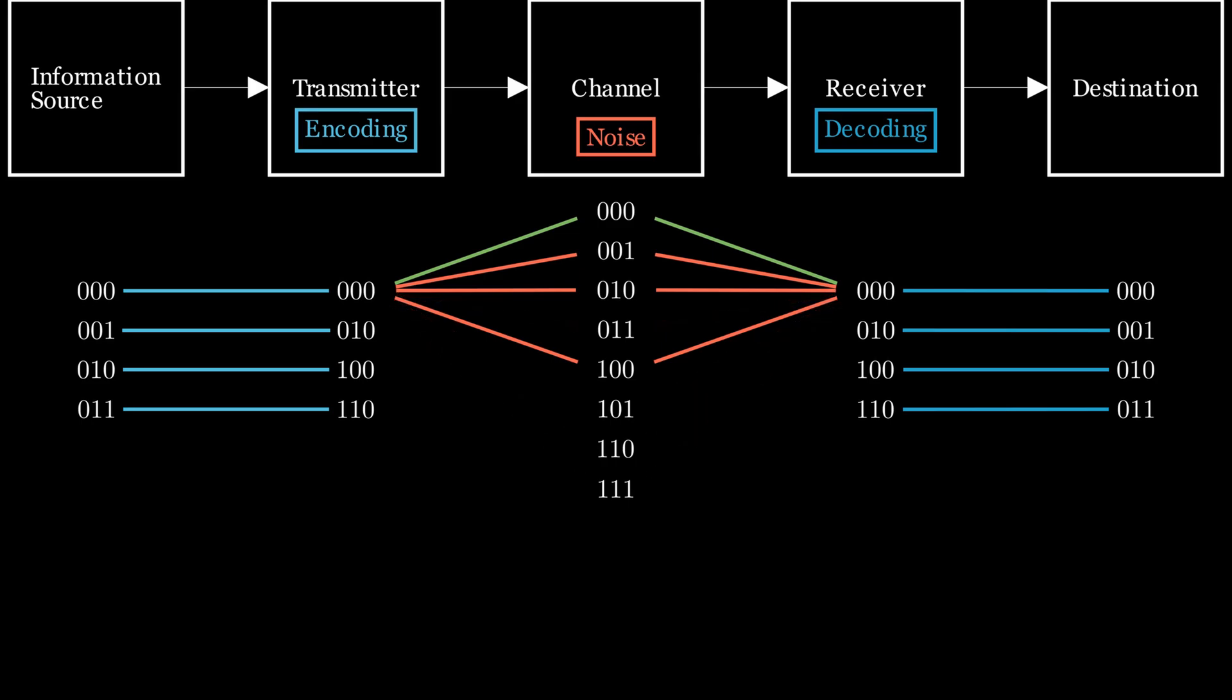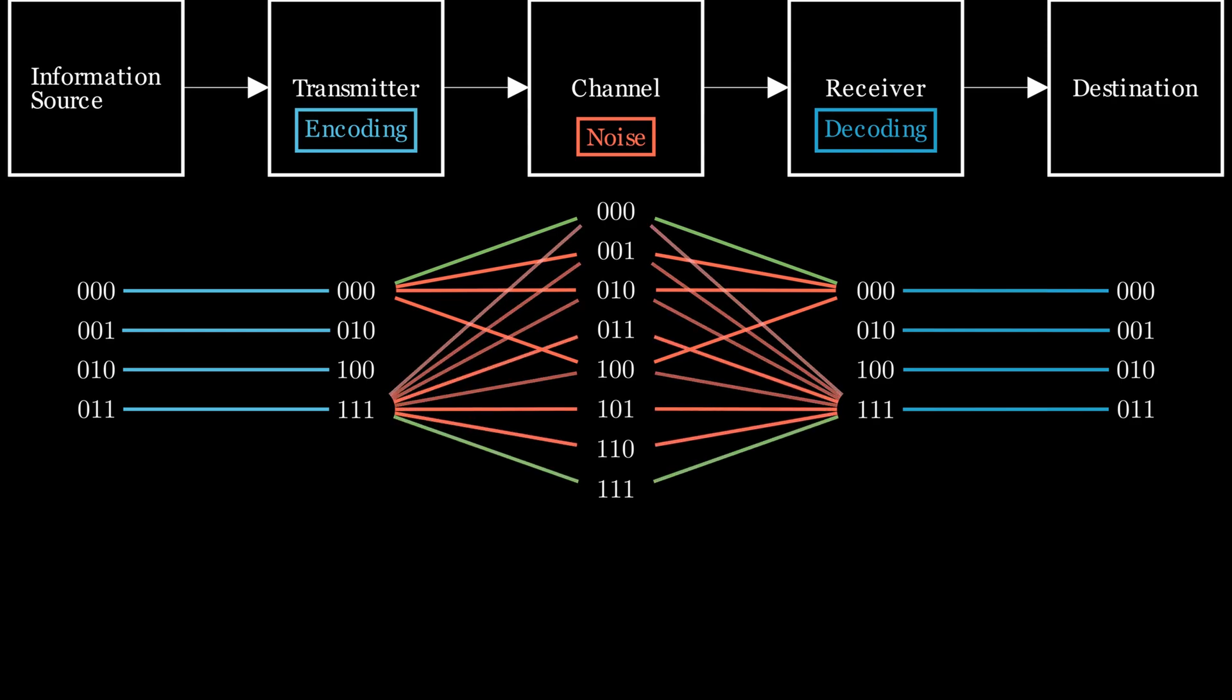And the same goes for the receiving part. To combat noise, we can just assume that some of those patterns of perturbation by noise are so improbable that they will never happen. Right now, we can use this encoding to send a second message through our channel, since their subset of probable outcomes of noise does not overlap.